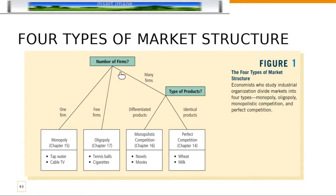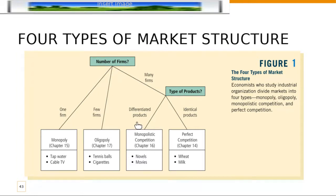If you have a few firms, this is oligopoly — things like sports equipment, tennis balls, and cigarettes. However, if you have many firms, the question we have to ask is whether these firms' products are differentiated or identical. If they're identical, this is perfect competition — things like wheat and milk, where no one has better cows than other cows. However, if they're differentiated, then we're in monopolistic competition — things like books, movies, but fast food is the best example to keep in mind.